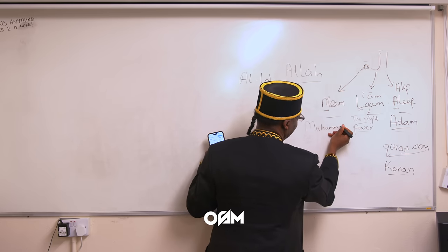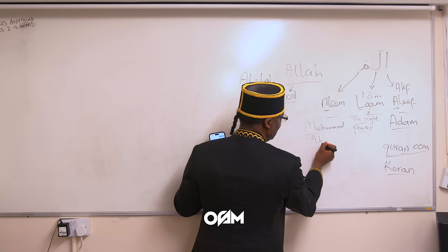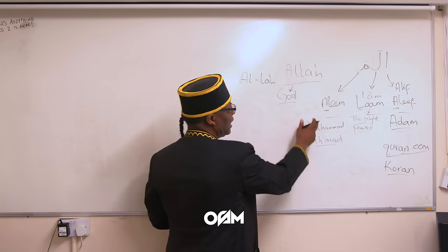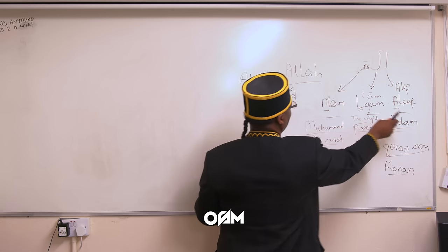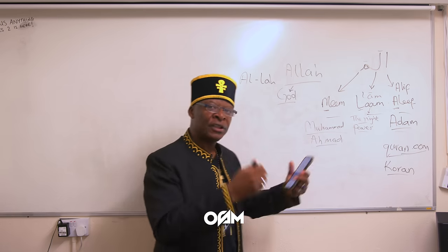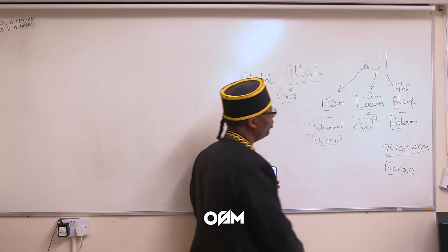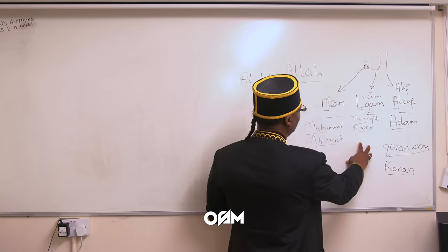Muhammad — spelled in many ways — is really Ahmad. That's what the Meem represents. So the three letters Alif, Lam, and Meem represent: Adam, who was the first person according to the religious books; the Night of Power, when the Quran was being received; and Muhammad, who was receiving it.